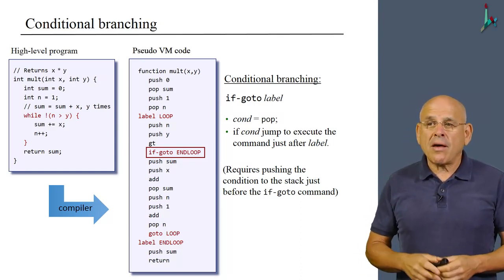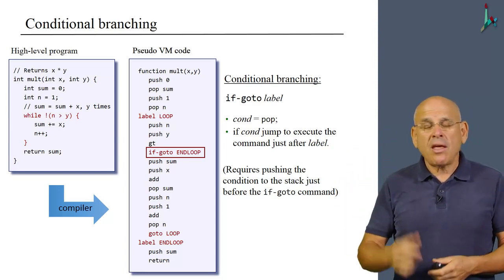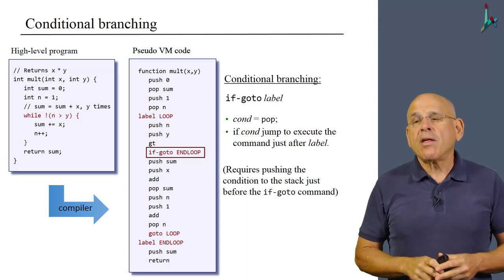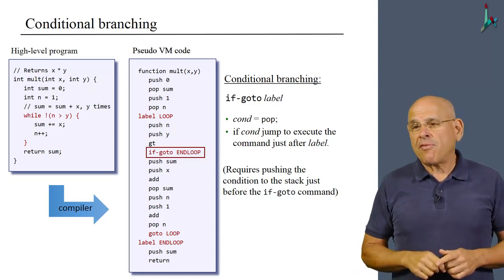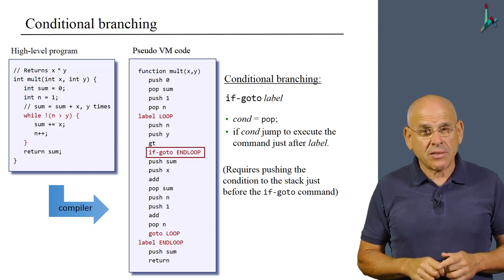So once the computer will evaluate push n, push y, gt, it will get the truth value that will determine if a conditional jump should actually materialize.